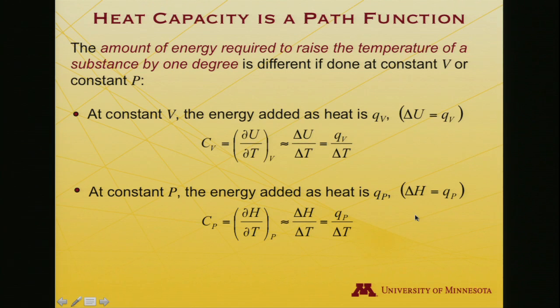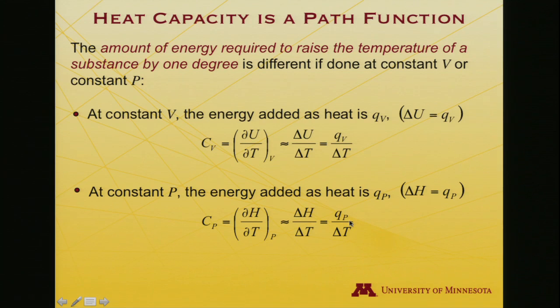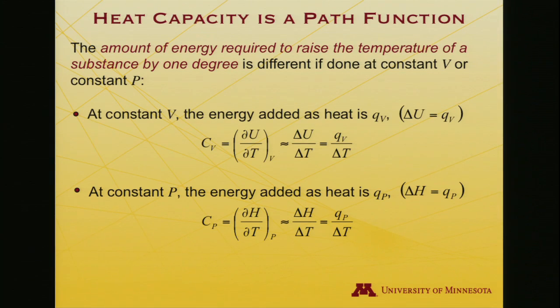At constant pressure, on the other hand, we define the constant pressure heat capacity as the change in enthalpy with respect to the change in temperature, because at constant pressure the heat is equal to the enthalpy. So the amount of heat required to change the temperature by one degree — that is the heat capacity, the definition — and so it's ∂H/∂T at constant pressure. With those definitions in mind, let's think about what their relationship might be.